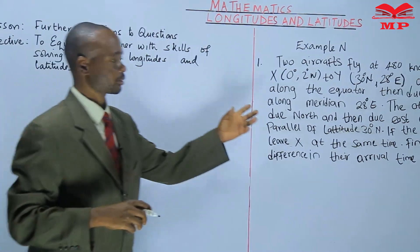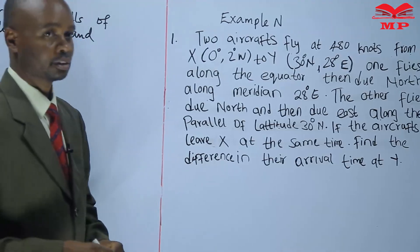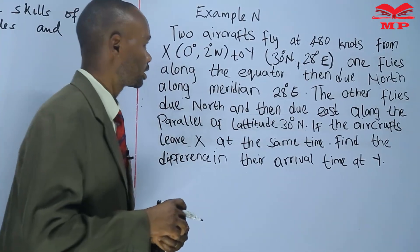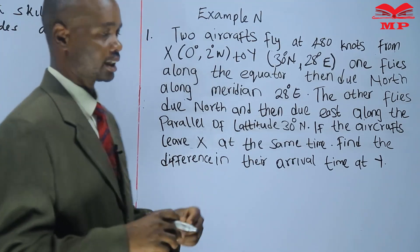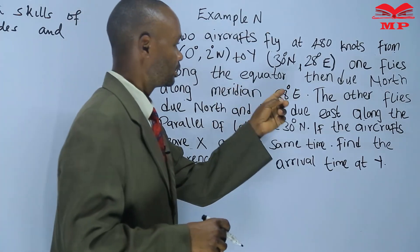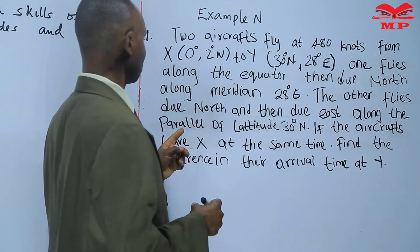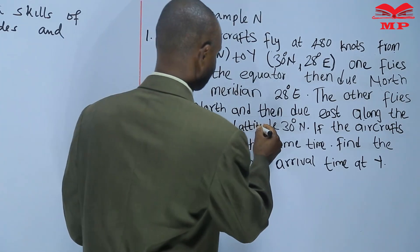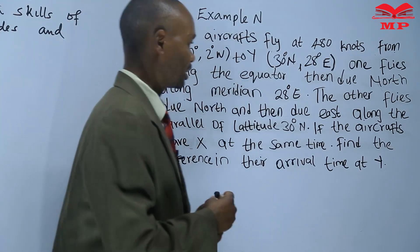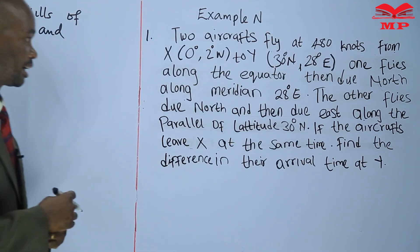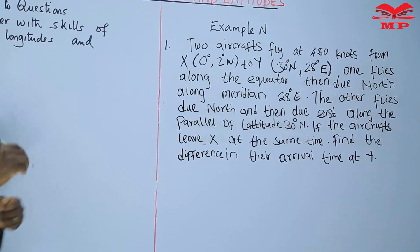Straight to the question: two aircrafts fly at 480 knots from a point X at zero degrees, two degrees west, to Y at 30 degrees north and 28 degrees east. One flies along the equator then due north along meridian 28 degrees east. The other flies due north and then due east along the parallel of latitude 30 degrees north. If the aircrafts leave X at the same time, find the difference in their arrival time at Y.